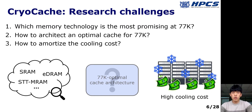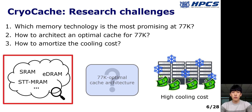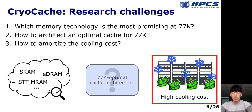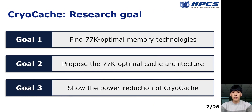However, there are three challenges in cryogenic cache research. First, we do not know the most promising memory technologies for cryogenic caches. Next, the absence of a cryogenic-optimal cache architecture is another major challenge. Finally, we should overcome the huge cooling cost for cryogenic computing. To resolve these challenges, we set three research goals: find the optimal memories for cryogenic caches, propose the cryogenic-optimal cache architecture, and show the performance gain and power reduction of cryogenic caches.